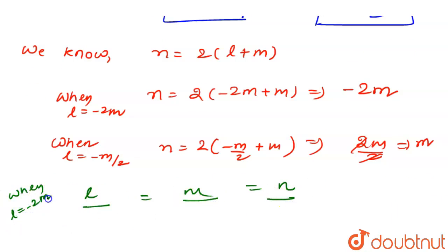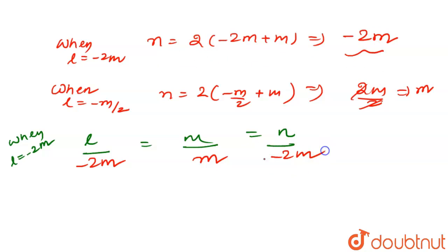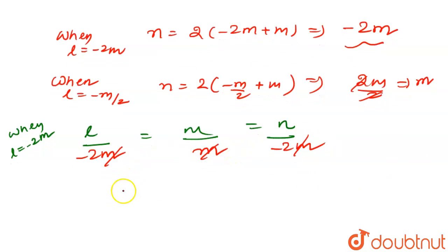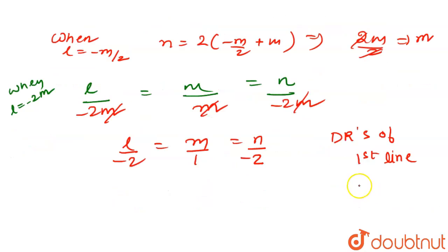For the first case, l = −2m, m = m, and n = −2m. Cancelling m from all three terms gives l/(-2) = m/1 = n/(-2). So the direction ratios of the first line are (−2, 1, −2).